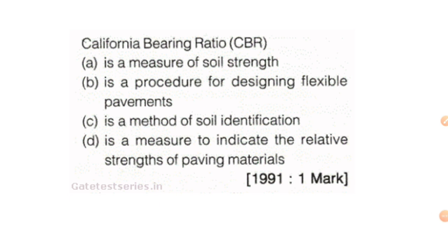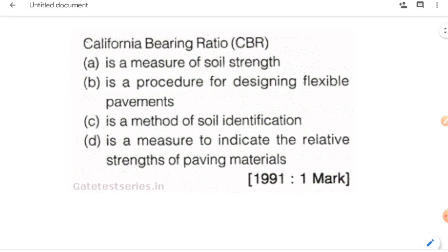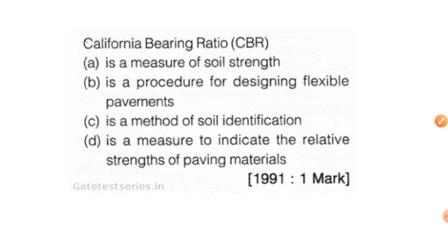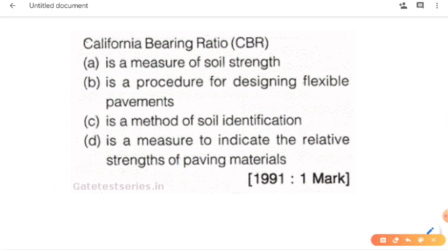The California Bearing Ratio, that means CBR — this is a question from 1991. The options are: it is the measure of soil strength, it is a procedure of designing a flexible pavement, it is the method of soil identification, or it is a measure to indicate the relative strength of pavement. The answer is: it is a procedure of designing a flexible pavement.